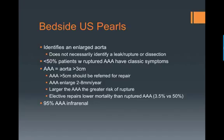The larger the AAA, the greater the risk of rupture, and elective repairs have a lower mortality than a ruptured AAA. And again, 95% of all AAAs are infrarenal — so that's why it's important to make sure to scan the entire aorta.